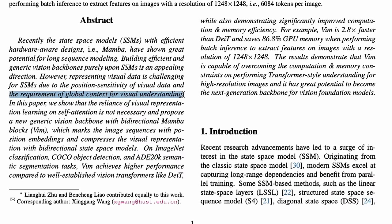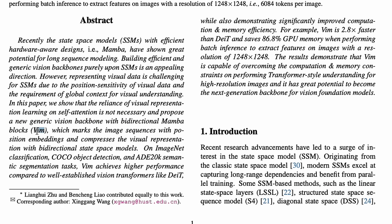Even if you split an image into a grid of 8x8, you still need global visual understanding — you can't just see eight individual patches and say this is a picture of the Mona Lisa. In this paper, they have shown that the reliance of visual representation on self-attention (the transformer-based approach) is not necessary, and they propose a new generic vision backbone with bidirectional Mamba blocks, which they call VIM. It marks image sequences with positional embeddings and compresses visual representation with bidirectional state space models.